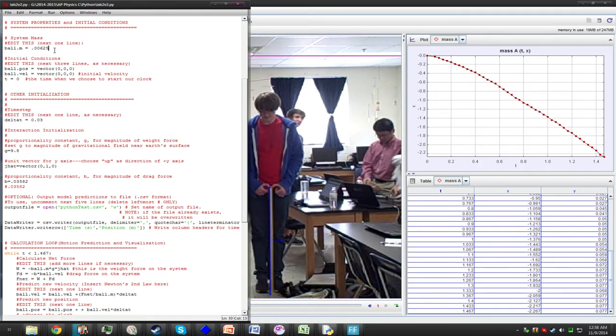To get an accurate model, I had to include the Drag Force, which is equal to negative b times v, where b is a constant drag coefficient and v is velocity. To find b, I had to alter the drag coefficient until Python came up with the total distance which was close enough to the actual distance.